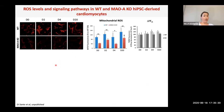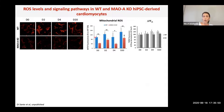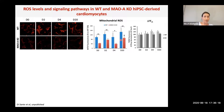Since MAOA generates ROS, we looked at whether ROS levels differed during differentiation stages. Wild type cardiac myocytes showed a slight increase in mitochondrial ROS formation at each stage of differentiation, peaking when cardiac myocytes were formed. In contrast, MAOA knockout cells showed a dramatic downregulation in mitochondrial ROS levels that did not change much throughout differentiation stages, but increased when cardiac myocytes were formed — suggesting that at the final stage, ROS are produced not by MAOA but by some other source. Mitochondrial membrane potential was not affected, so mitochondrial function appeared intact.